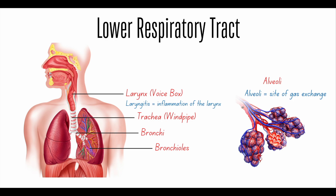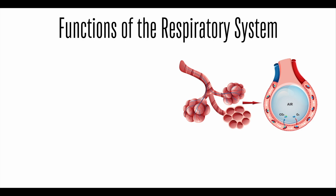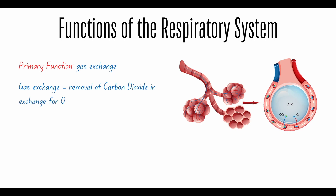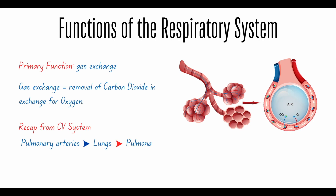Now that we've learned about the upper and lower respiratory tract, let's talk about the function of the respiratory system. The primary function is gas exchange — basically the removal of carbon dioxide in exchange for oxygen. If you remember from a previous video about the cardiovascular system, the pulmonary arteries take deoxygenated blood to the lungs. That's where gas exchange occurs: carbon dioxide is exchanged for oxygen, and oxygenated blood returns to the heart through the pulmonary veins.